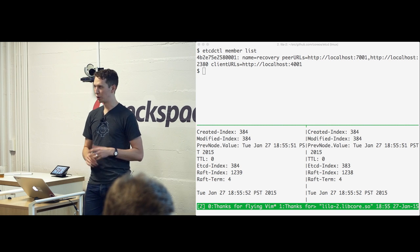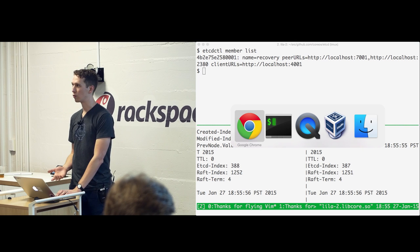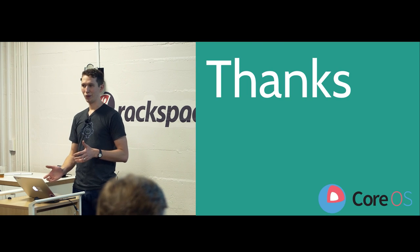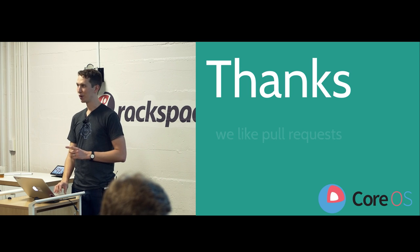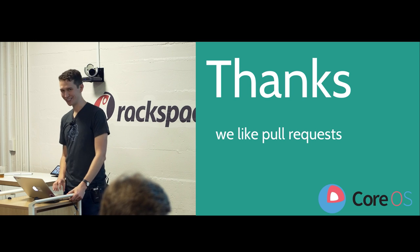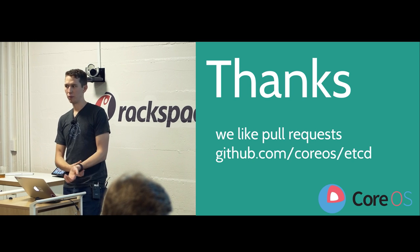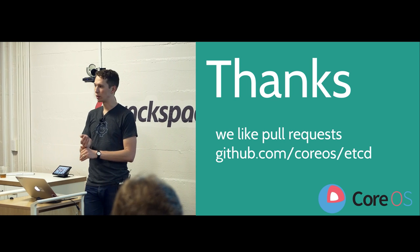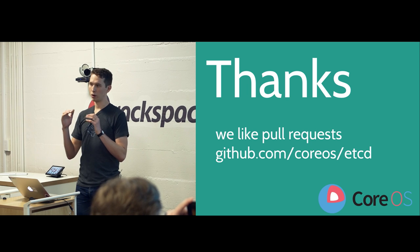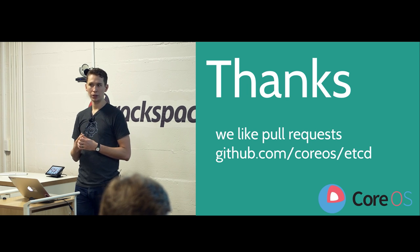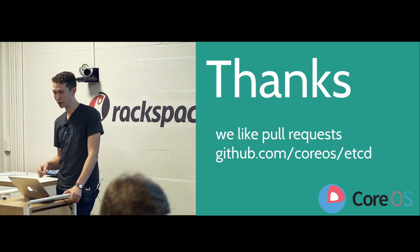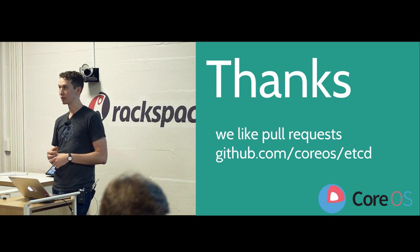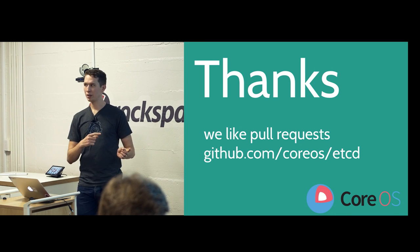Those are some of the features added into etcd 2.0 over the 0.4 branch — lots of protections against misconfiguration, backups, and that sort of thing. We like pull requests — there's a repo on GitHub, Apache licensed, with bugs labeled as things we need help with. We're looking at adding a lot of new features after this 2.0 release: we've started designing a version three API, looking at how to make our internal store more efficient, improve memory consumption, all the usual things — faster, less memory, more efficient. etcd 2.0 is really just the start of a lot of new stuff to better support all the applications built on etcd. Thank you for your attention.